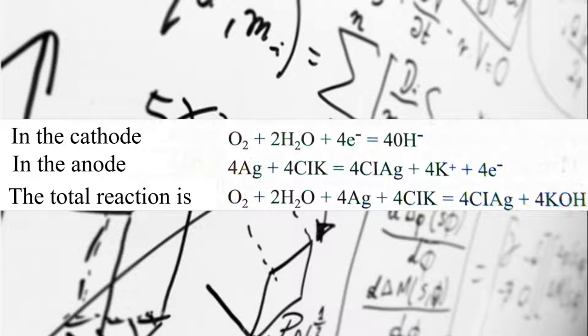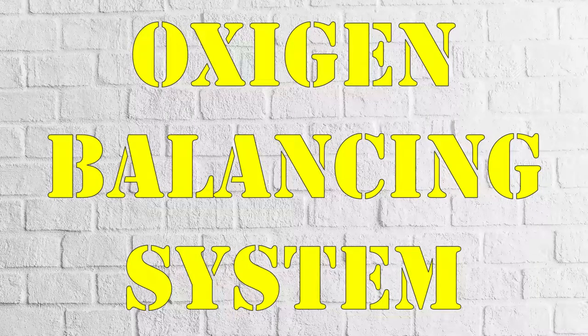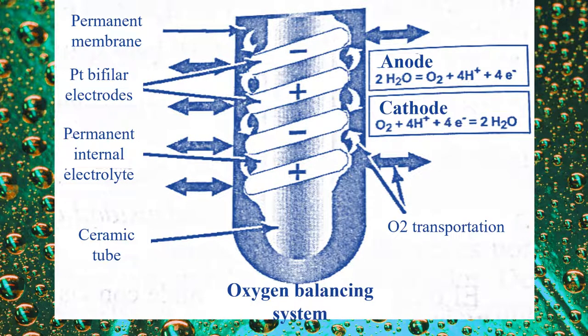The oxygen balance system has three electrodes with a potassium hydroxide electrolyte. Oxygen from the liquid diffuses through the sensor membrane and is reduced at the cathode, while an equal amount of oxygen is generated at the anode.